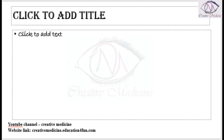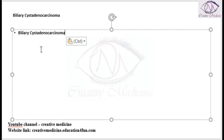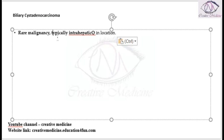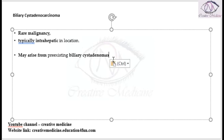Biliary cystadenocarcinoma is a rare malignancy which is seen mainly inside the liver, that is intrahepatic in location. It can also arise from pre-existing biliary cystadenoma, and a pre-existing biliary cystadenoma may also convert into biliary cystadenocarcinoma.